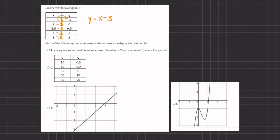All right, so now that we have a linear function, let's read our options. A says y is equivalent to the difference between the value of x and a constant c, where c equals negative 3.